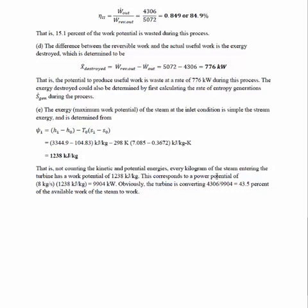So if we account for the total mass flow rate, which we know, we can determine the 9,904 kilowatts is the maximum possible work that would ever occur from this turbine. That would be if the inlet conditions were allowed to go completely to dead state and convert everything to work. Obviously that's not going to happen. The turbine is converting about 43.5% of the available work to work output.